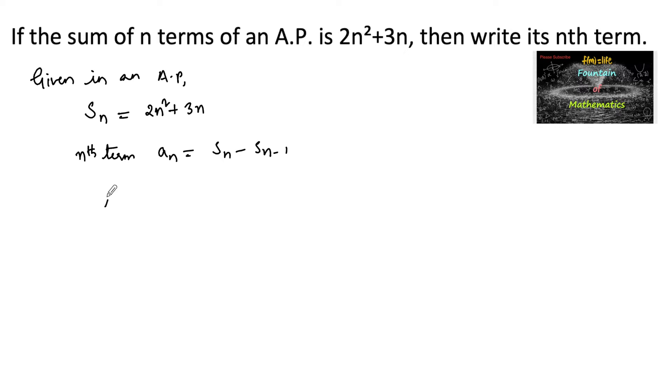So we can find the nth term AN equals Sn, which is 2n square plus 3n, minus Sn minus 1. We can use it as 2 times n minus 1 whole square plus 3 times n minus 1, by substituting in place of n minus 1.